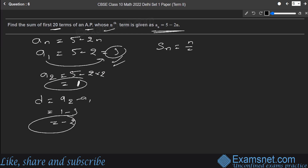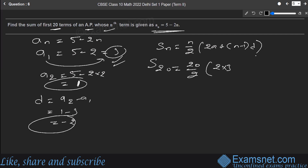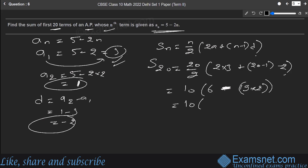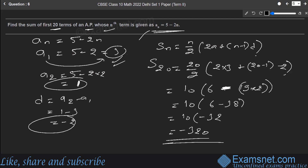Using the sum formula Sₙ = (n/2)[2a + (n−1)d]: S₂₀ = (20/2)[2(3) + (20−1)(−2)] = 10[6 + 19(−2)] = 10[6 − 38] = 10 × (−32) = −320. The sum of the first 20 terms is −320.